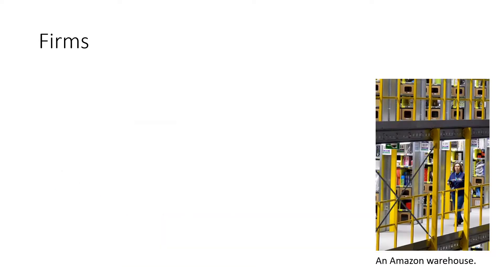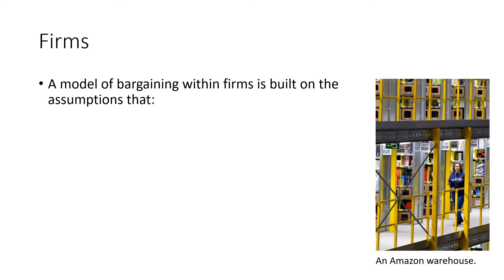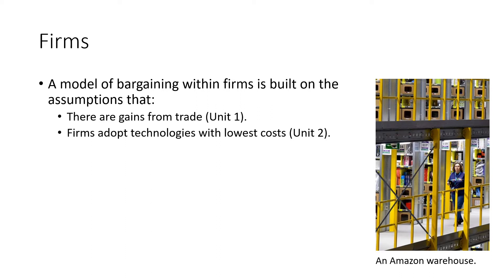Now we'll use a little bit of foreshadowing to cover what type of assumptions we're making in the model next week. The model will be a model of bargaining with firms, built on a couple of assumptions drawing on past knowledge. The first is that there are gains from trade — anytime two individuals, firms, or any parties come together, there are potential gains for both.